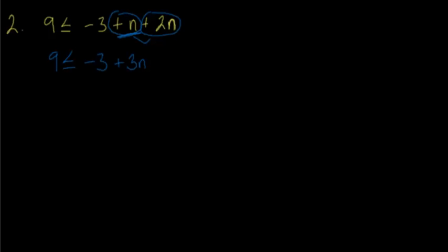We want to eliminate the constant. And in this case, the constant is located right here. It's a negative 3, the inverse of that is to add 3. So those will cancel out right there. And whatever I do to one side, here's our inequality. We're going to add the 3 to the 9 on this side. So we end up with 12 less than or equal to 3n.